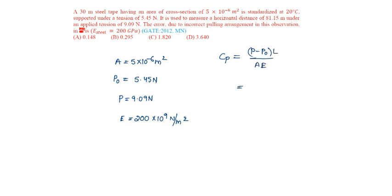Substituting P is 9.09 minus P₀ is 5.45 into L is given as 81.15 meters × 10^3 in mm by area is given as 5 × 10^-6 into E is given as 200 × 10^9. That will be equal to 0.295 mm, option B.